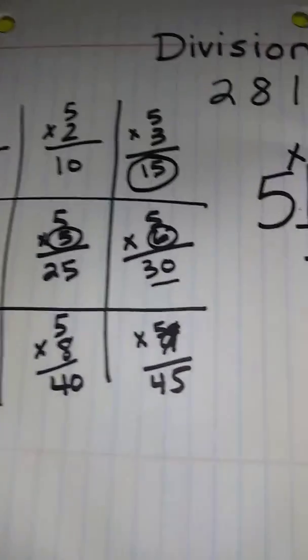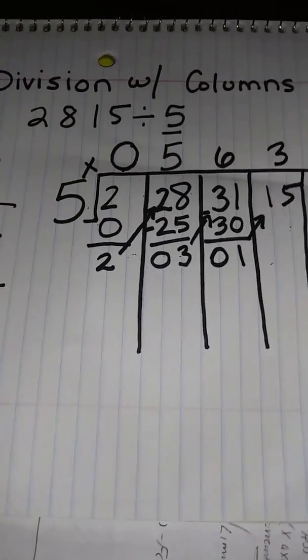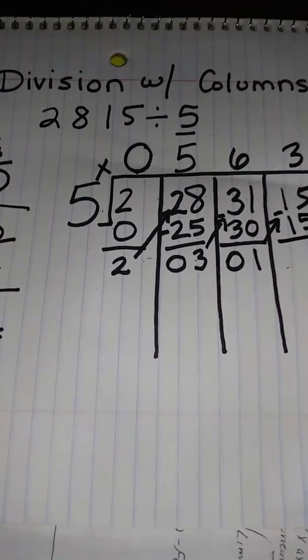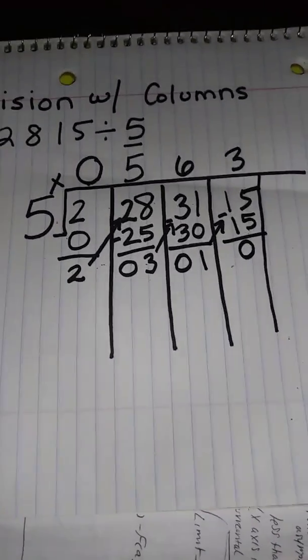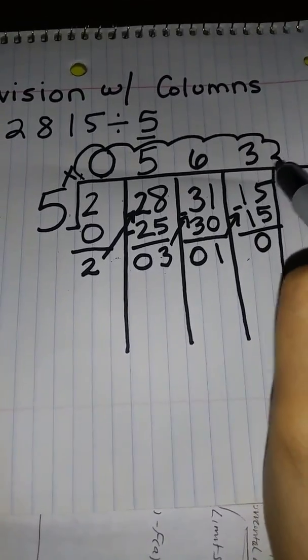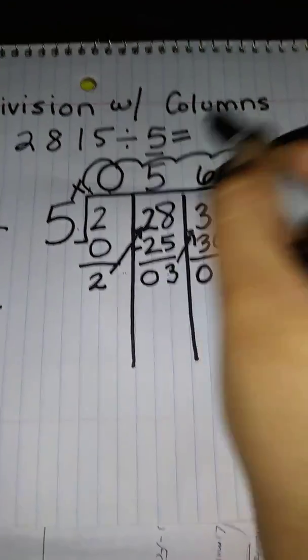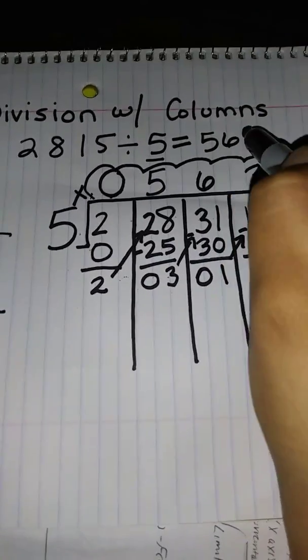So the number on the top will be 3. 5 times 3 is 15. You're going to be left with 0. So then your quotient, the answer to your problem will be at the top. So 2,815 divided by 5 is going to give you 563.